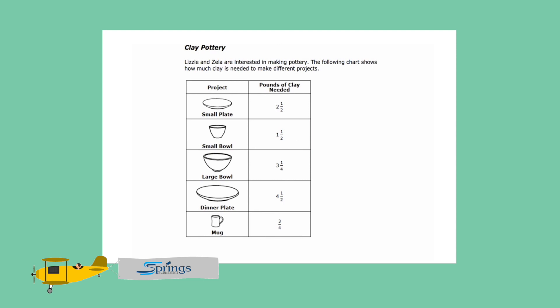The small plate takes two and a half pounds of clay. The small bowl takes one and a half pounds of clay. Large bowl, three and one-fourth pounds of clay. The dinner plate takes four and a half pounds of clay. And finally, the mug takes three-fourths pounds of clay.